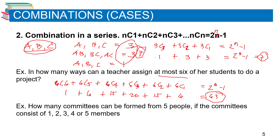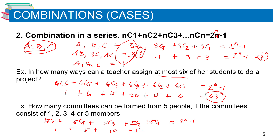Example number two: In how many ways can committees be formed from 5 people if committees consist of 1, 2, 3, 4, or 5 members? We compute 5C5 plus 5C4 plus 5C3 plus 5C2 plus 5C1, or 2 raised to 5 minus 1. That equals 1 plus 5 plus 10 plus 10 plus 5, which is 31 ways. That is combination rule number two.